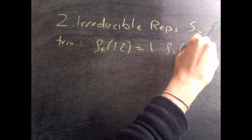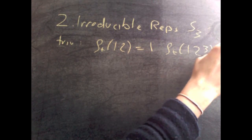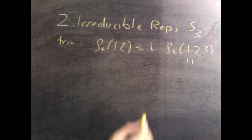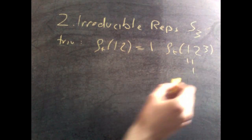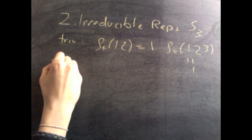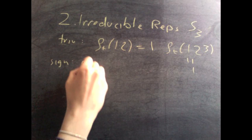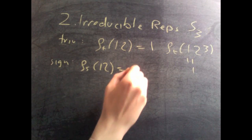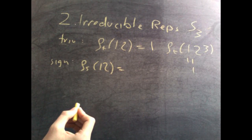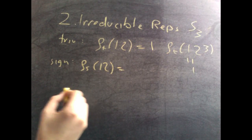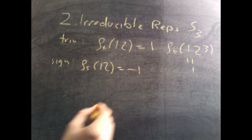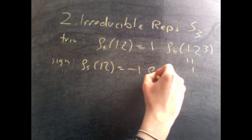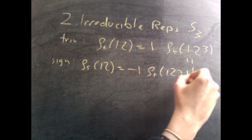And rho sub t of 1, 2, 3, the 3-cycle, that's also 1. Now, for the sign representation, rho s of the 2-cycle, remember, the sign representation sent the reflection to minus 1, and it sent the rotation, which is the 3-cycle, to 1.